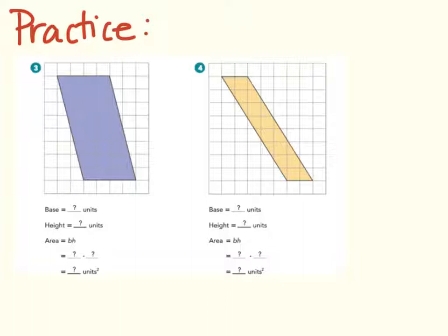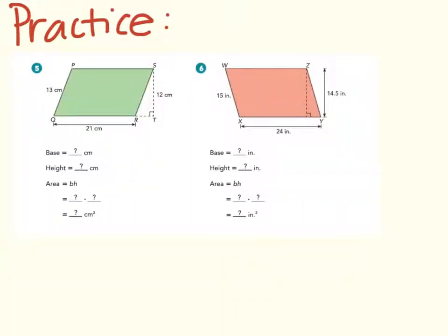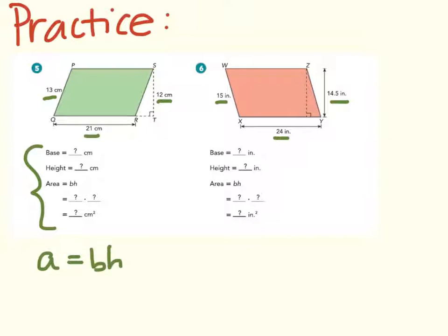Here are problems 3 and 4. Press pause while you work, and we'll finish up with numbers 5 and 6 after this. Now find the area of each of these parallelograms. Just in case it's tricky to read: this is 13, this is 21, this is 12, this is 15, this is 24, and this is 14.5. You do not have to fill these in if that is not helpful to you — you may go directly to the formula, which is area equals base times height. Press pause while you work, and when you come back we'll start working on trapezoids.